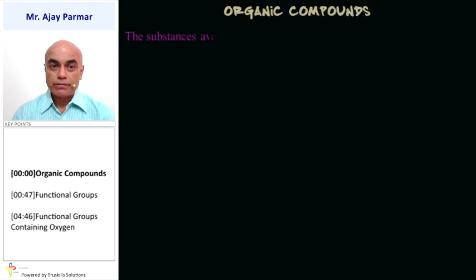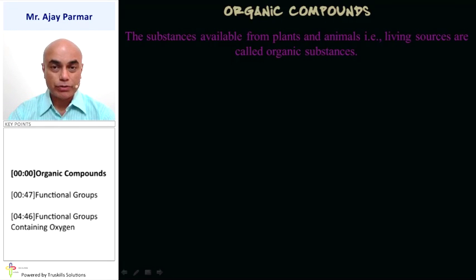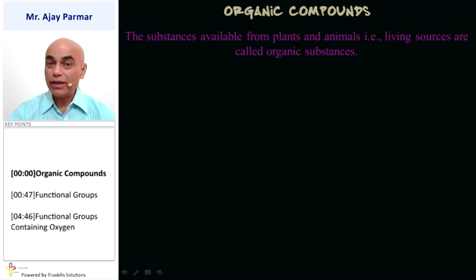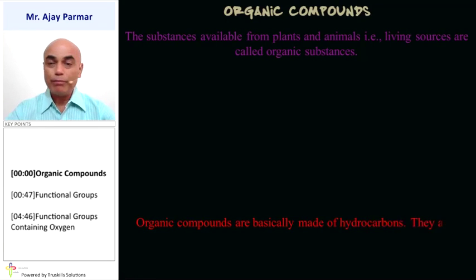Organic compounds. The substances available from plants and animals, that is from living organisms, they are considered to be organic compounds. The substances which are available from the crust of the earth, from the environment, other than from plants and animals, they are inorganic. Whereas if obtained from living organisms, then they are organic compounds.